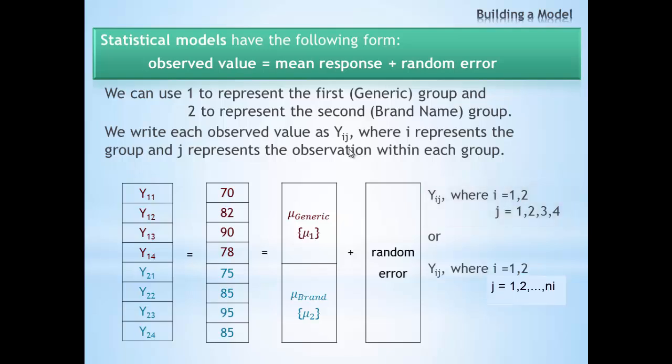In this example, each group has four observations, so j goes from 1 to 4. In some studies, there is not an equal number of observations in each group. We can use n sub i to represent the size of each one of our groups.